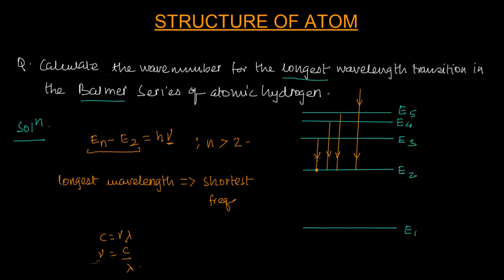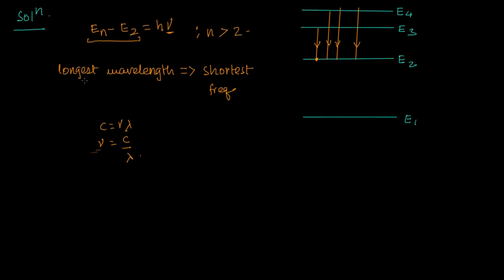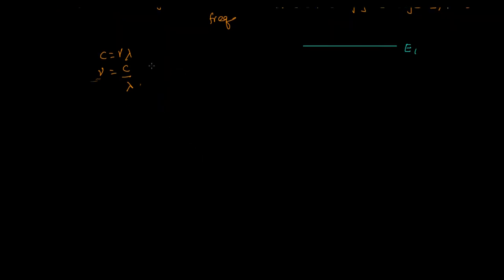If the frequency is shortest, the energy difference between the two levels has to be the least. Among all Balmer transitions, the one with the least energy change is the 3-to-2 transition. So longest wavelength implies shortest frequency, which implies smallest energy change, and that means n has to be 3.